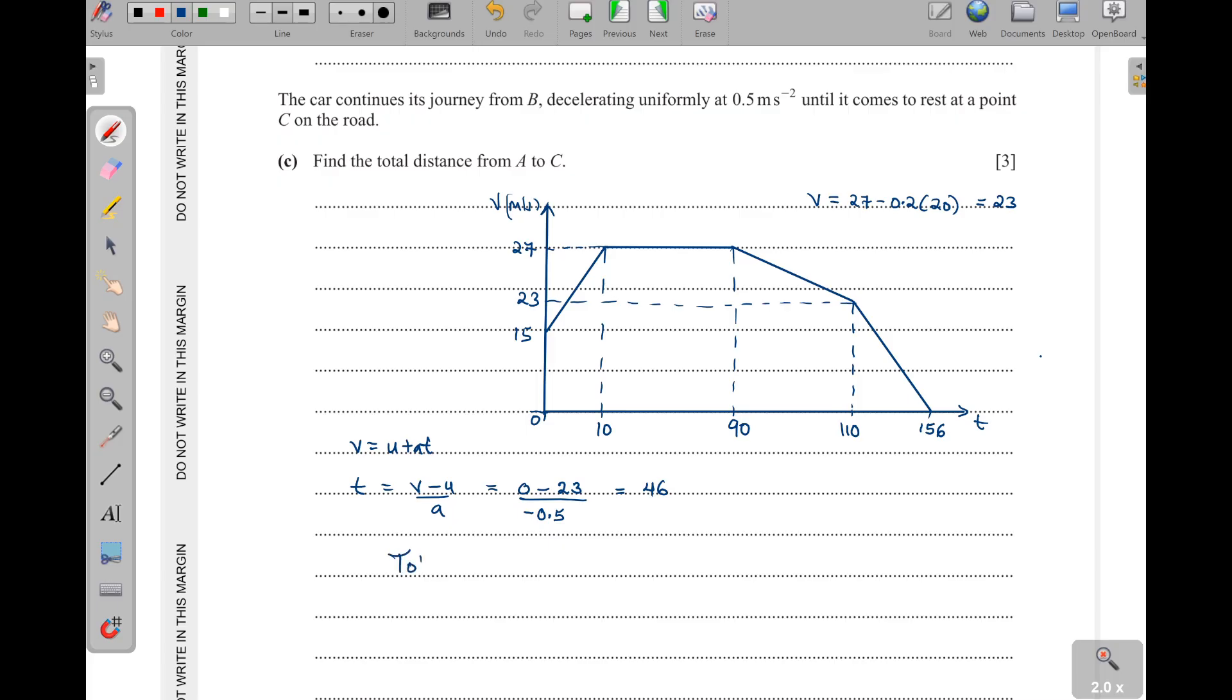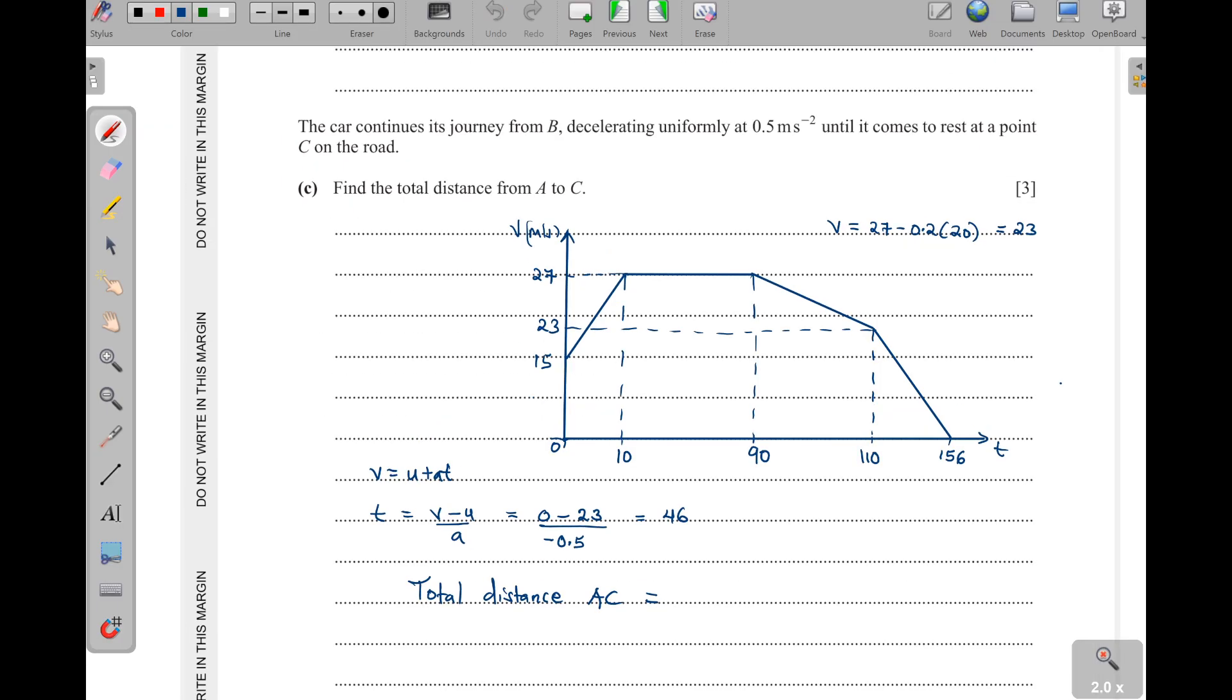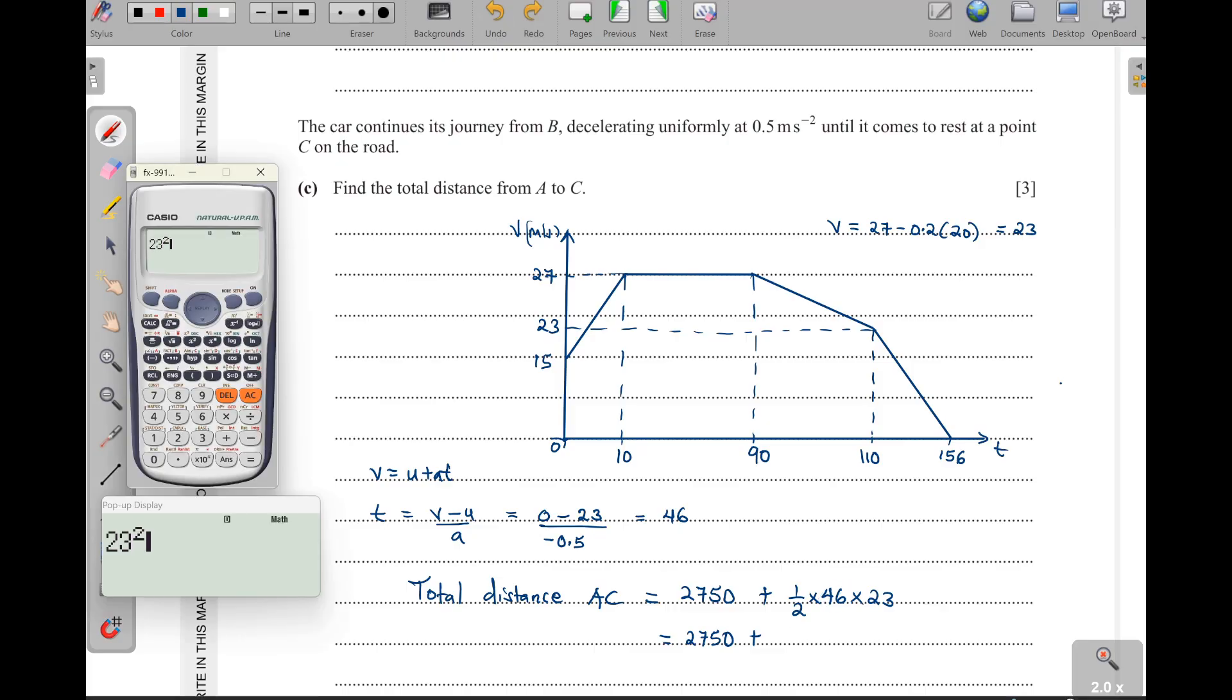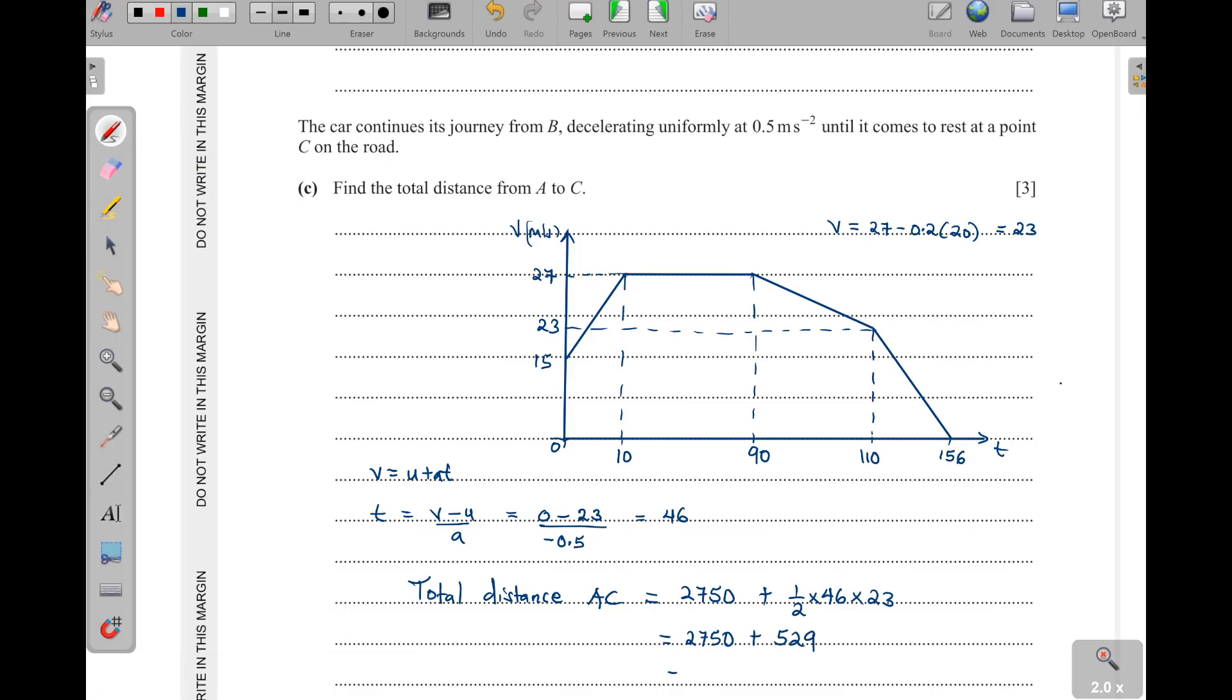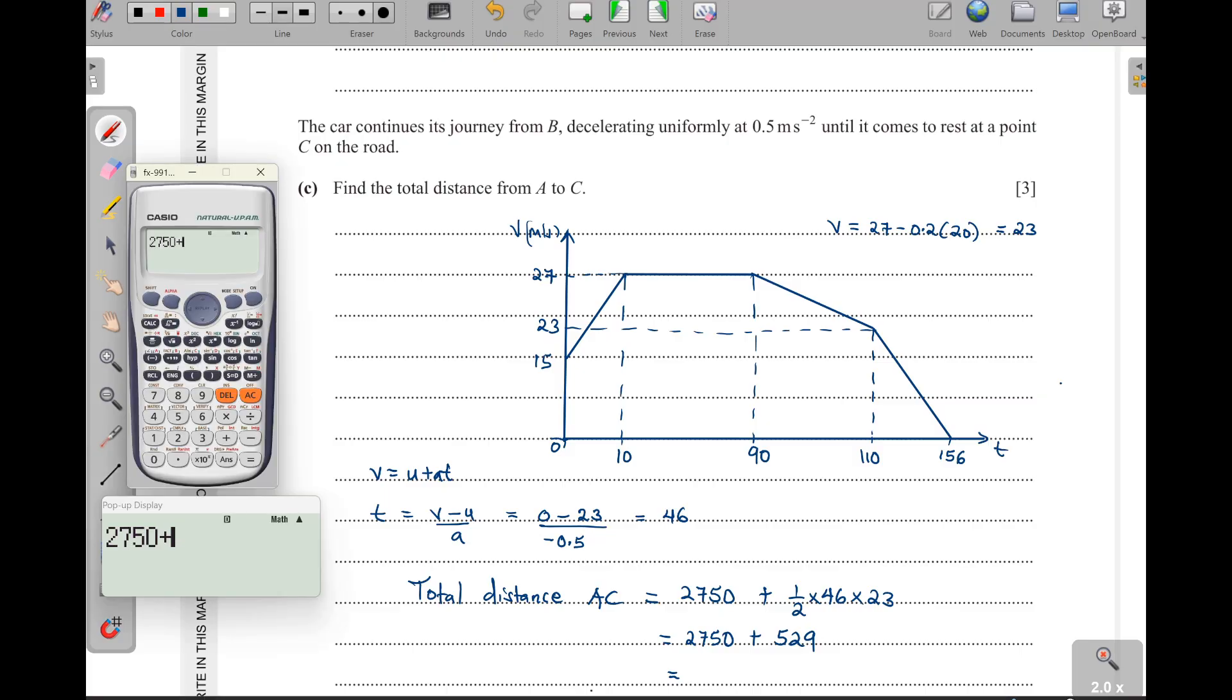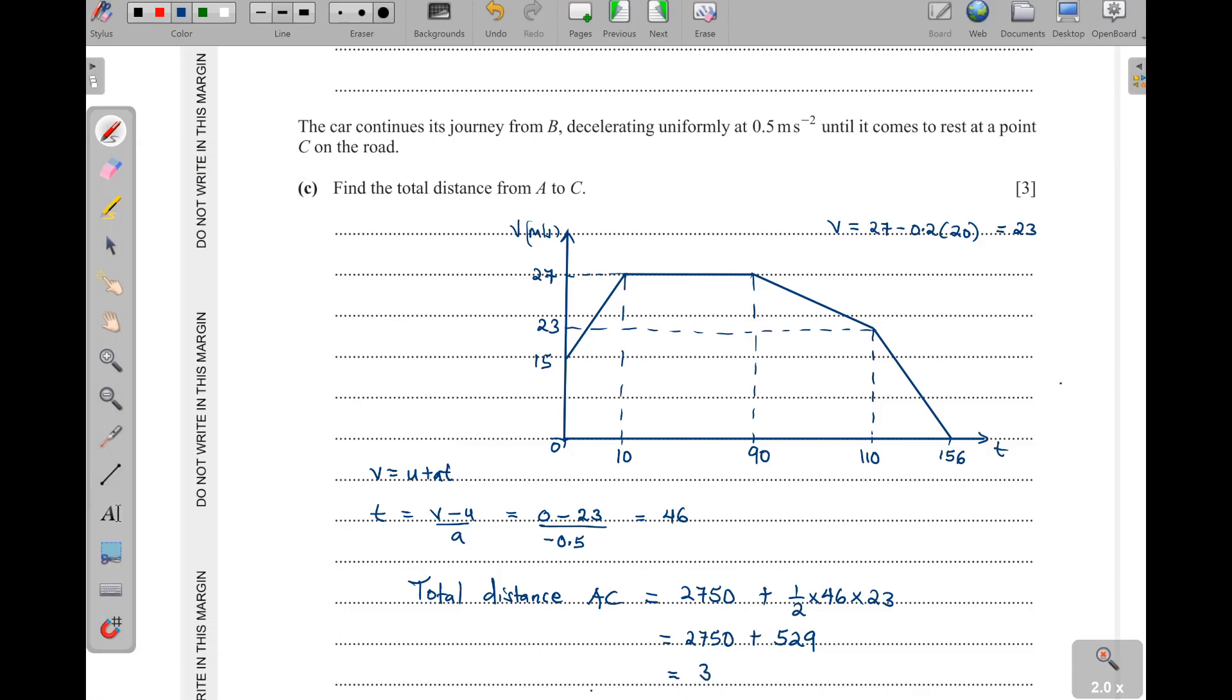They say total distance. So the total distance from A to C, remember they say the distance from A to B was 2750. So to move from here up to here is 2750, then we shall add on this one here, which is a triangle. So an area of a triangle is a half times the base times the height. So the base here is 46 and then times the height from here up to here, that is the 23. So you have 2750, then plus this is 23 times 23, 23 squared, that is 529. So when I add it to 2750, 2750 plus 529, we get 3279 meters. That is that.